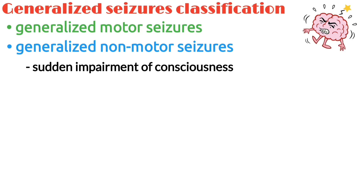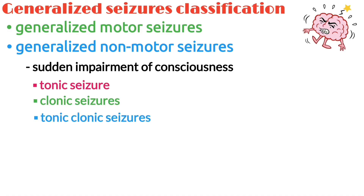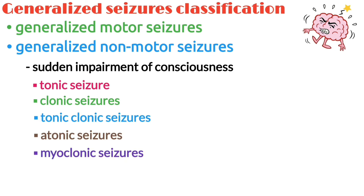Generalized motor seizures include tonic seizures, clonic seizures, tonic-clonic seizures, atonic seizures, and myoclonic seizures.